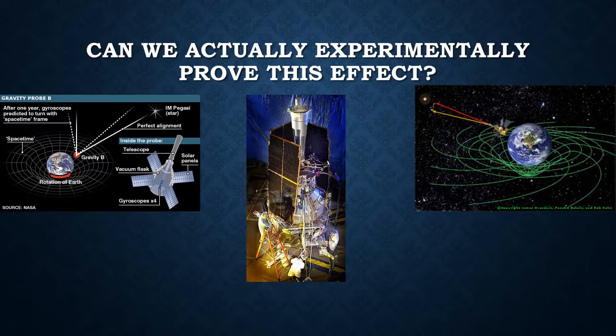Actually measuring the frame-dragging effect and proving it occurs as predicted is fairly difficult. This is due to the fact that the effect caused by the Earth is extremely small and would be difficult to measure, and there aren't any extremely large rotating masses in space that we could get to that would produce an easily measurable effect. This represents a conundrum as to how to experimentally prove this effect. Turns out, while around the Earth frame-dragging is an extremely small effect, with sensitive enough equipment we can actually measure this to a significant amount of accuracy.